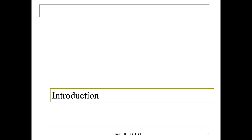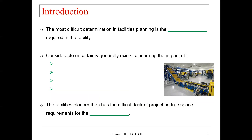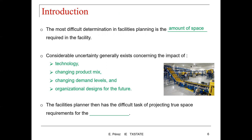As we have discussed during the first part of this semester, the most difficult determination in facilities planning is the amount of space required in the facility. There is some uncertainty generally existing concerning the impact of technology, a changing product mix, changing demand levels, and organizational designs for the future. These four areas create some uncertainty in terms of what will be needed and how that would impact our design for the facility.